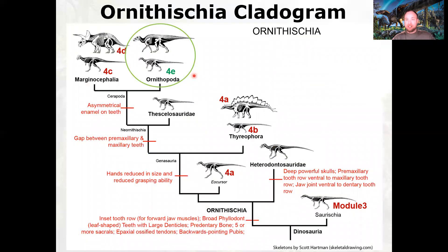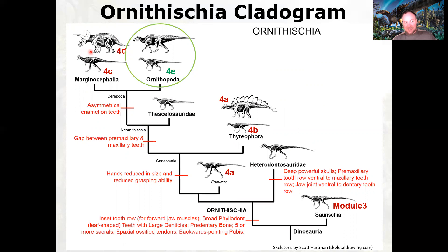Here's the Ornithischian cladogram. We talked about Saurusia last module, and we've talked about the other Ornithischians: the armored Thyreophora, the Theskalosaurs as an ancestral form, the Marginocephalia, the Pachycephalosaurs, and the Ceratopsians. Now we're going to talk about the Ornithopoda.